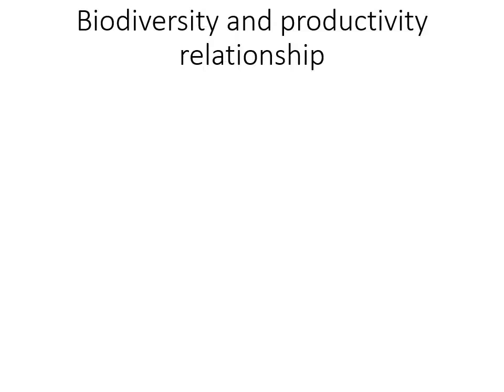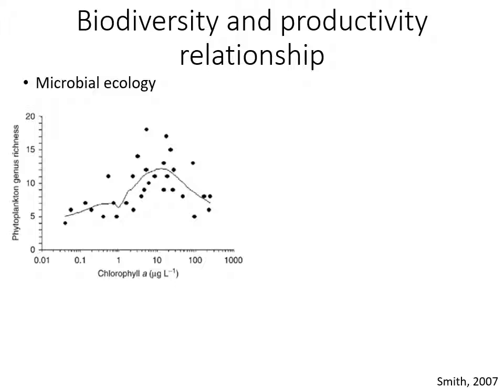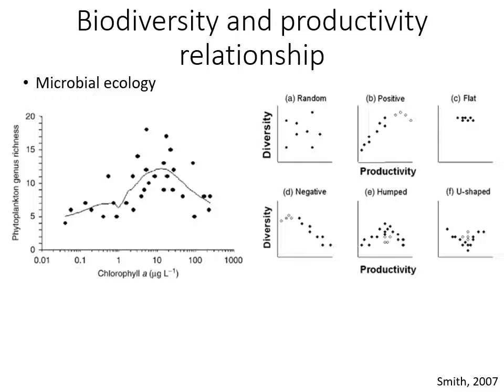So why is that important? In macroecology, biodiversity and productivity relationships have been extensively studied. We see that for example when tree species richness increases, productivity also increases in a positive relationship. In microbial ecology, however, this relationship has been probed in environments based on photosynthesis, just like macroecology. We see some different types of relationships there — not always positive — and those measurements are generally based on the indirect measure of chlorophyll.